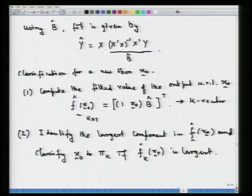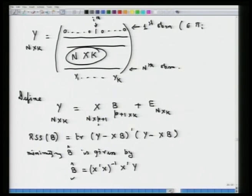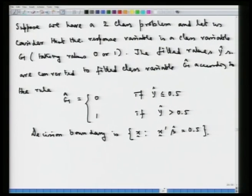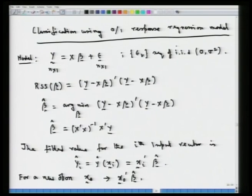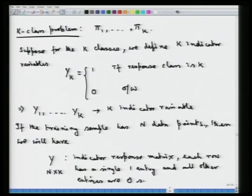This section covered classification based on a 0-1 response regression model — both for the two-class and k-class cases. In the next lecture, we are going to look at nearest neighbor classifiers and the logistic discrimination rule.